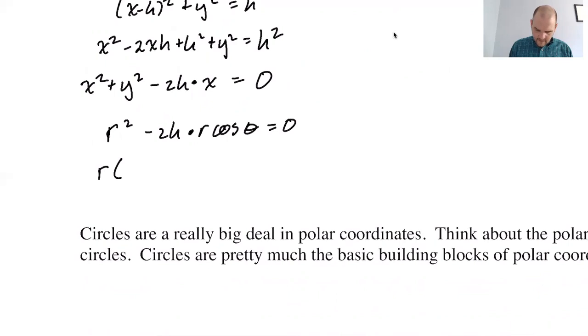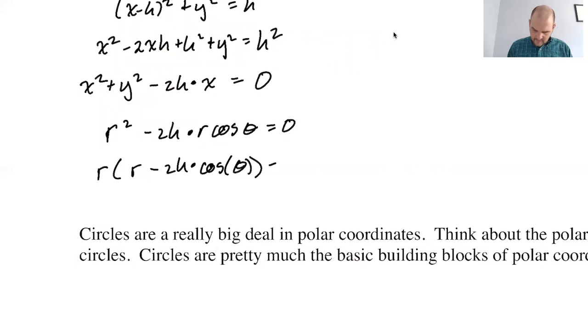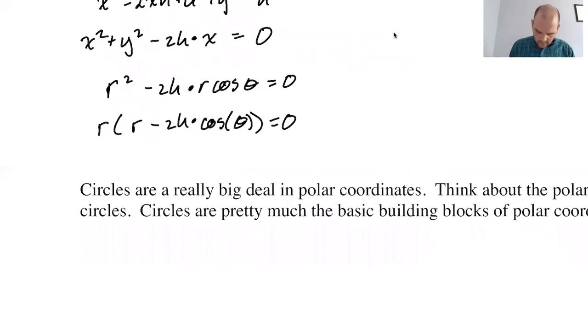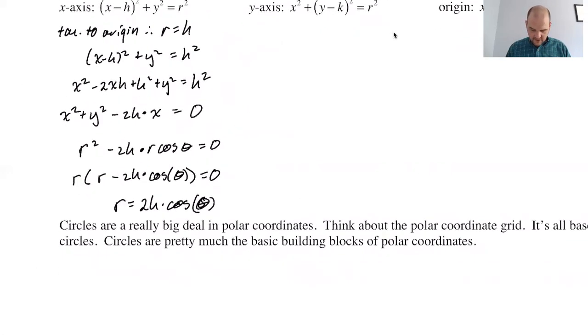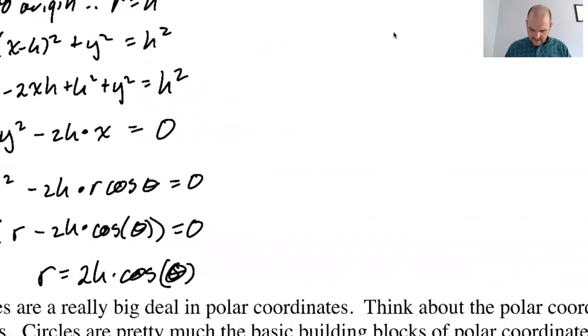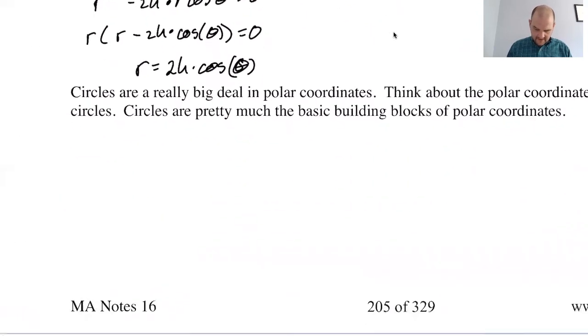We have x squared plus y squared minus 2xh plus h squared. So we have x squared plus y squared minus 2h times x equals 0 because the h squareds are gone. x squared plus y squared is r squared minus 2h, and then this is r*cos(θ) equals 0. You can factor r. Get r minus 2h times cos(θ) equals 0. So either r equals 0, which is extraneous, throw it out, or r equals 2h times cos(θ).